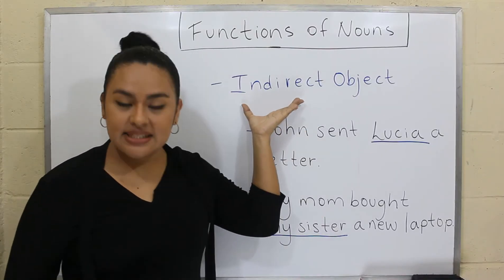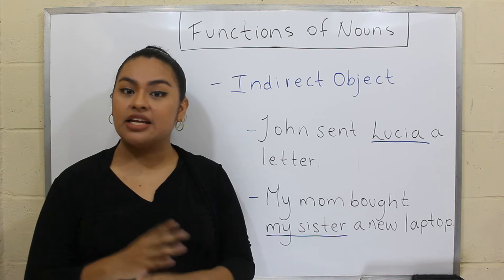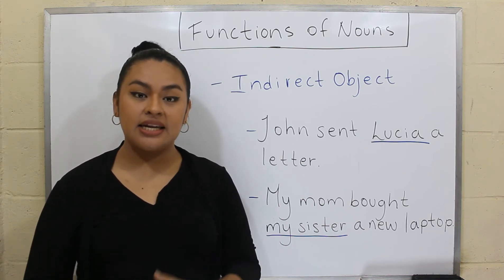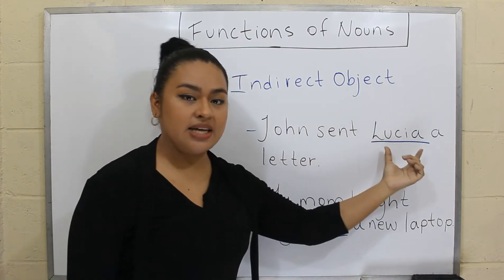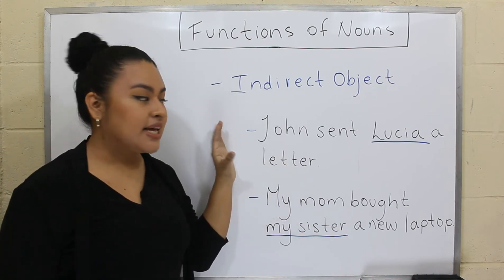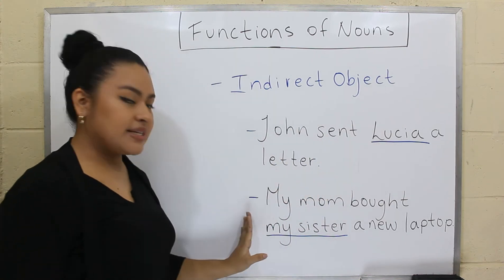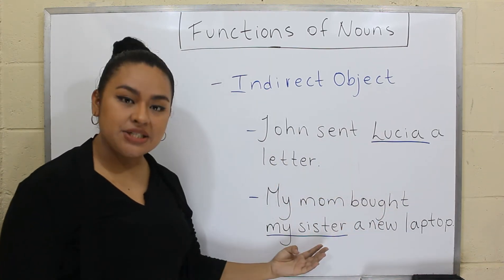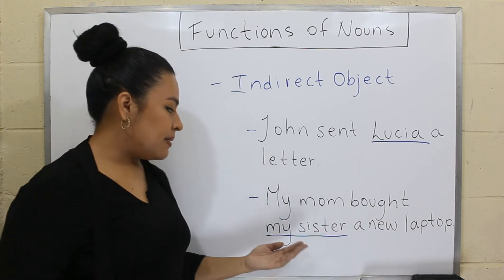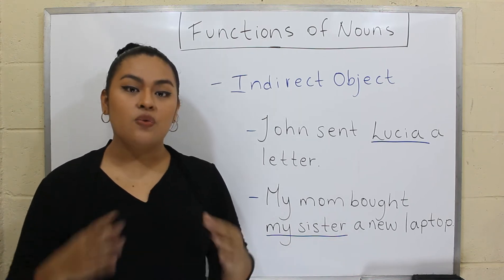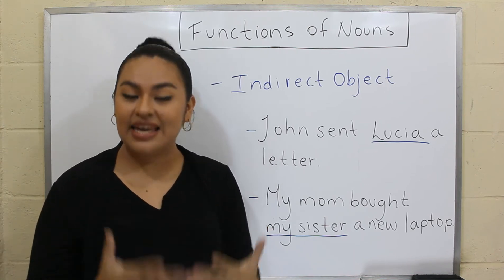Now let's talk about the indirect object. The indirect object is the receiver of the direct object, and it only happens in sentences that contain a direct object. Here we have some examples. John sent Lucia a letter. In this case, the indirect object is Lucia. Then in the next example, my mom bought my sister a new laptop. In this example, the indirect object is my sister.